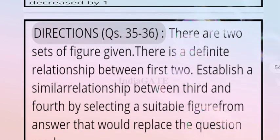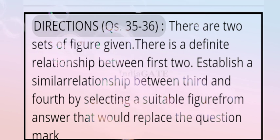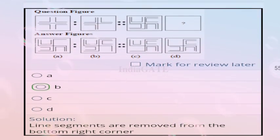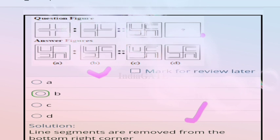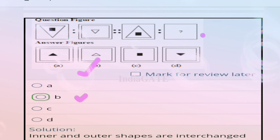Direction for questions 35 to 36: there are two sets of figures with a definite relationship between the first two; establish a similar relationship for the third and fourth. For question 35, correct answer is option B — line segments are removed from the bottom right corner. For question 36, correct answer is option B — the inner and outer shapes are interchanged.